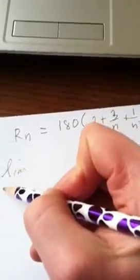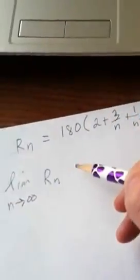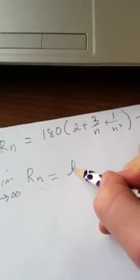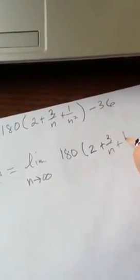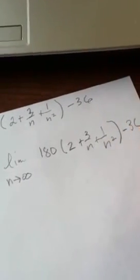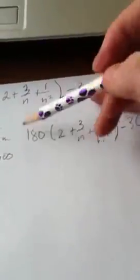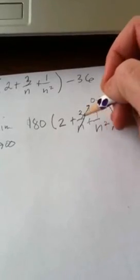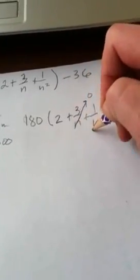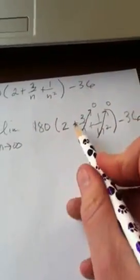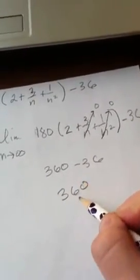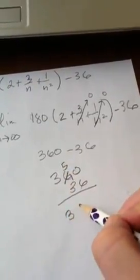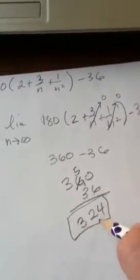If we take the limit as n approaches infinity of R sub n, we get the area underneath the curve. That equals the limit as n approaches infinity of 180 times (2 plus 3 over n plus 1 over n squared) minus 36. As n goes to infinity, 3 over n and 1 over n squared both go to 0, leaving 180 times 2 minus 36, which is 360 minus 36 equals 324. So the area underneath the curve is 324.